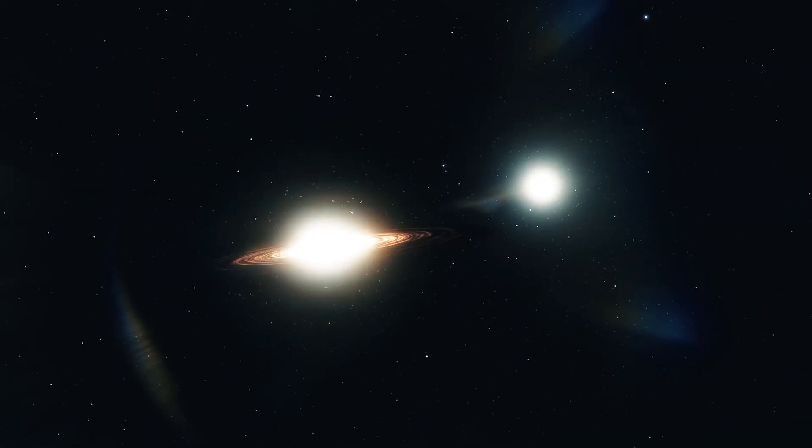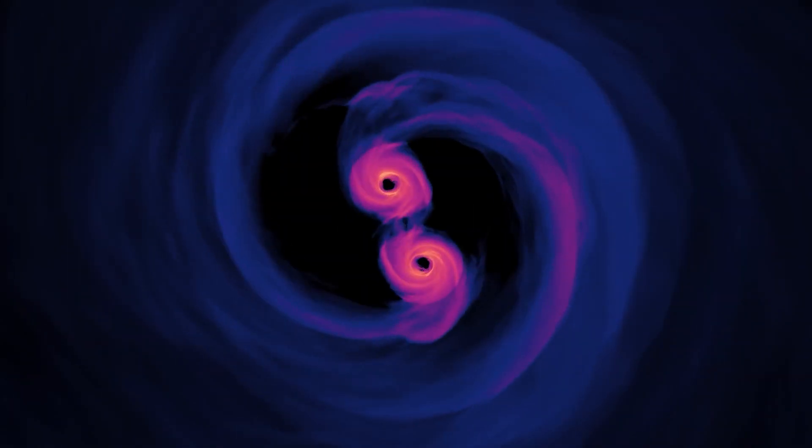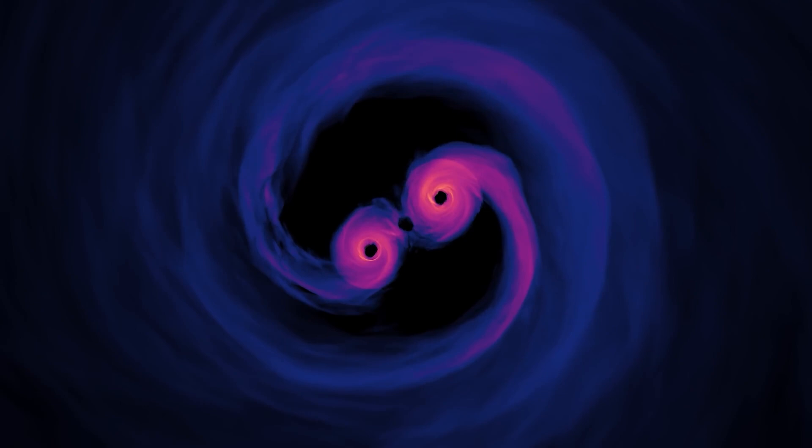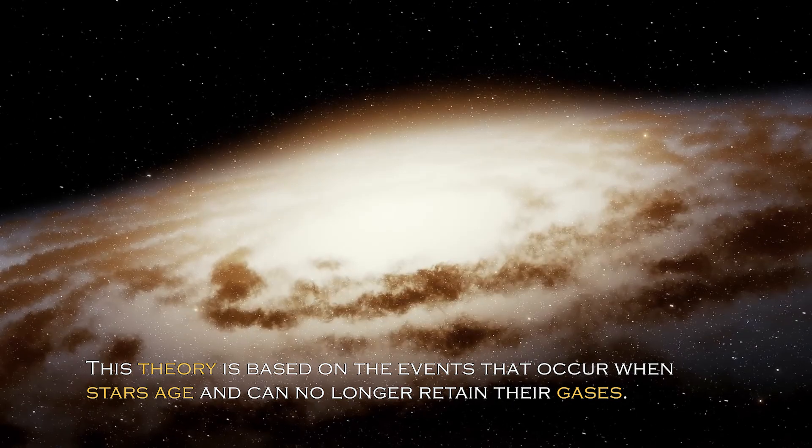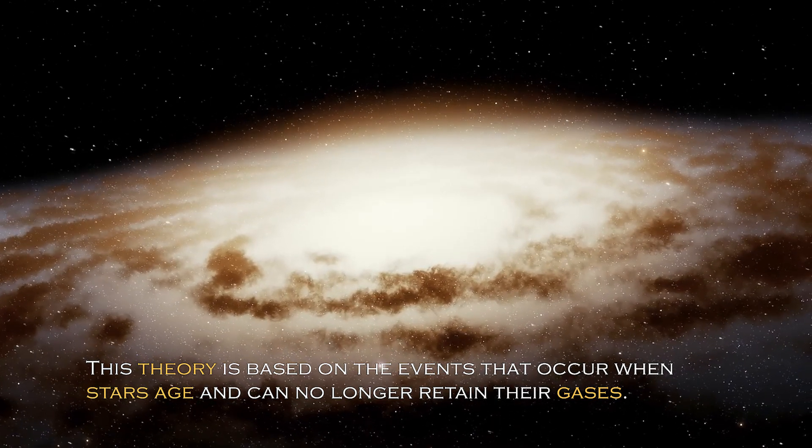Specifically, these stars and planets could continue to exist in the cosmos in a form that we could not currently detect. This theory is based on the events that occurred when stars age and can no longer retain their gases.